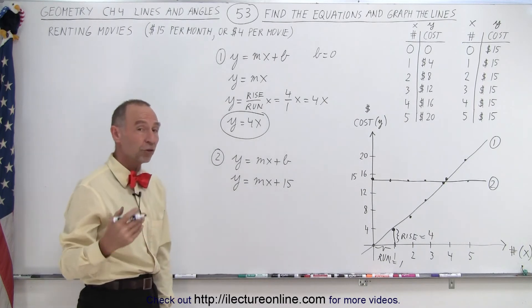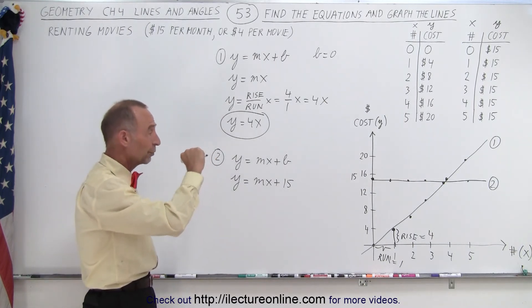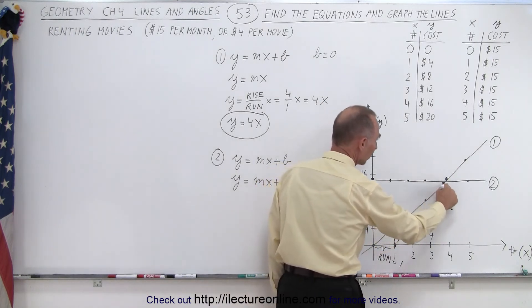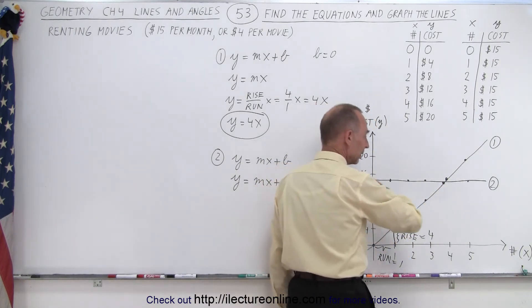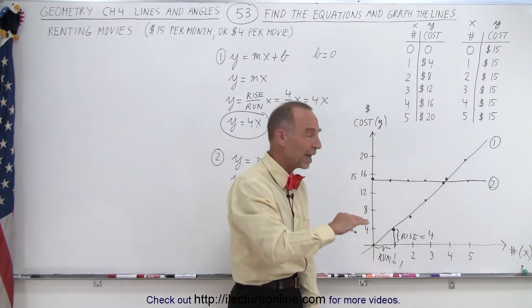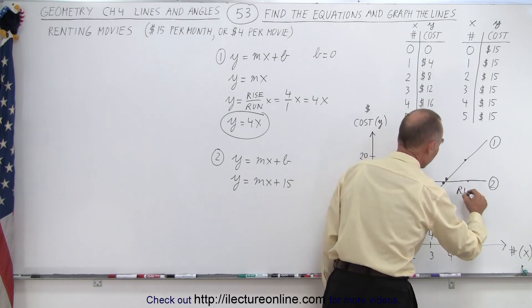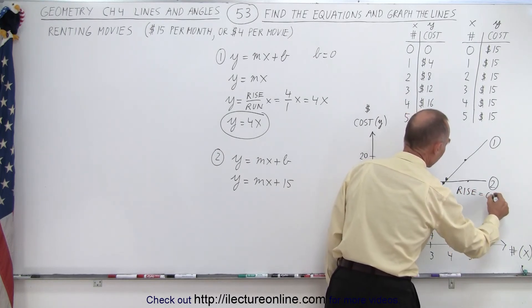But now I need to find the slope, and the slope is defined as the rise over the run. Notice when I go from point to point to point on the line, I see that there's no rise, there's no change in height. The value in the y direction is always exactly the same. So I can see that the rise here is equal to zero.